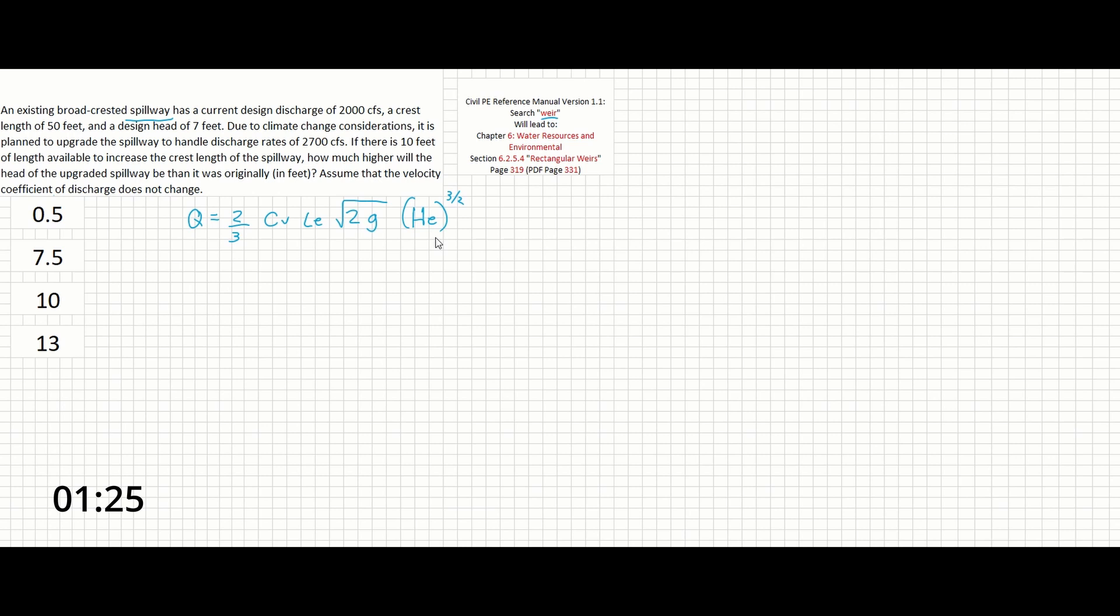In this equation, Q is going to be discharge in cubic feet per second, CV is the velocity coefficient of discharge, LE is the effective weir length, and HE is the energy head upstream of the weir, and G is 32.2 feet per second squared, aka gravity.